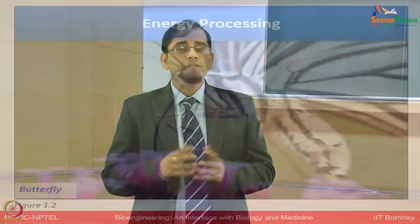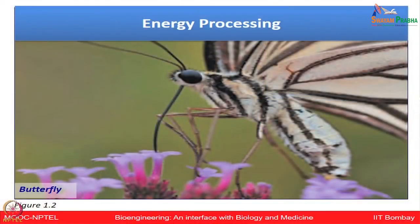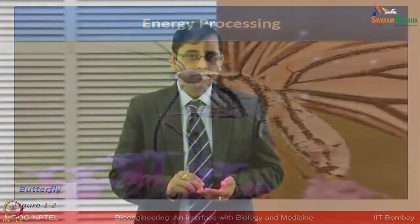Let us first start with energy processing. As you can see in the image, the butterfly is shown trying to obtain energy from the nectar of flowers. The hummingbird can use this chemical energy stored in its food to power flight and other activities.